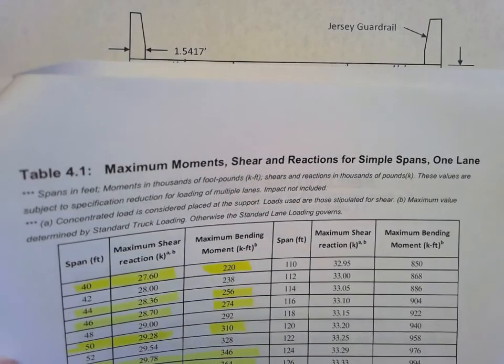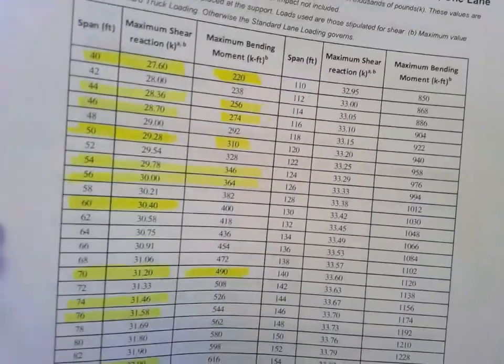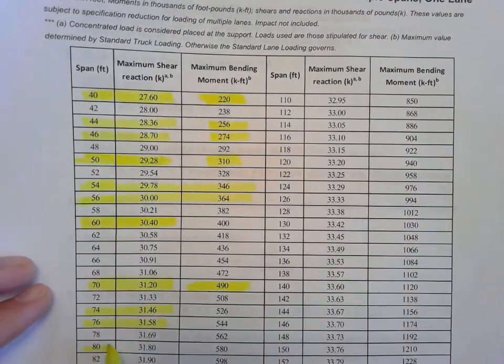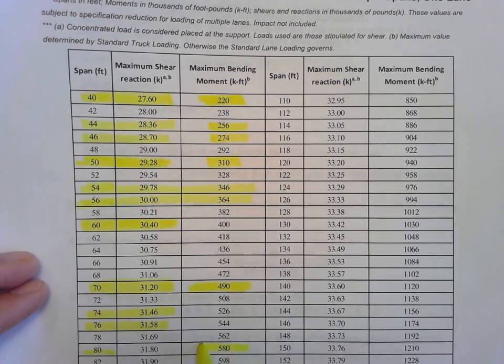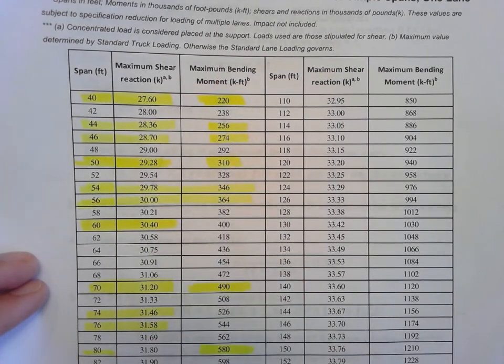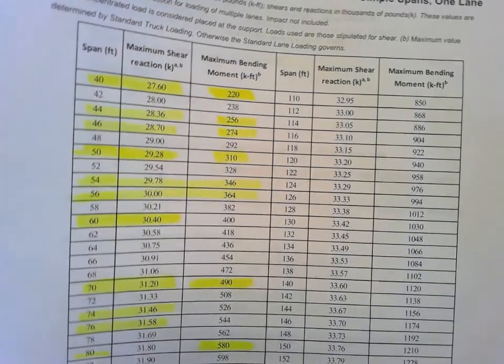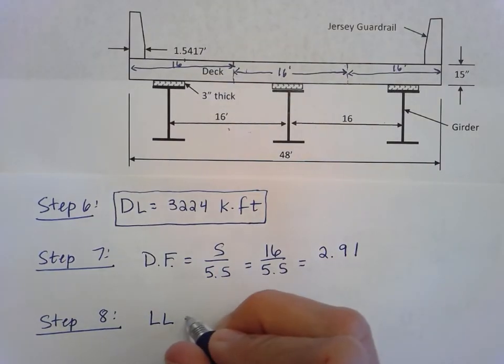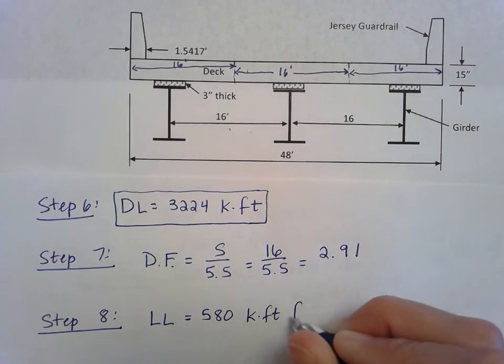We'll come down here to our 80 foot information for our span length of 80 feet. Remember, we don't need the shear information. We need the maximum bending moment in kip foot, and that is 580. So we'll use that here: 580 kip foot for our 80 foot span.